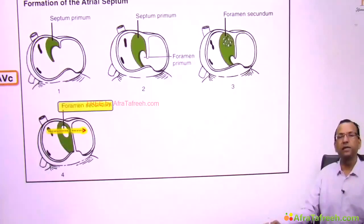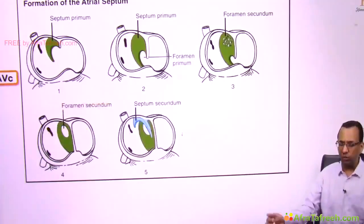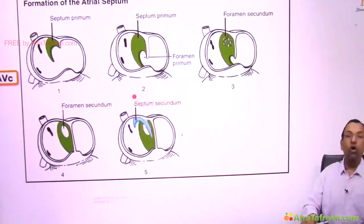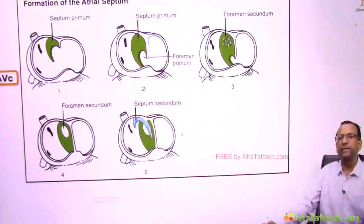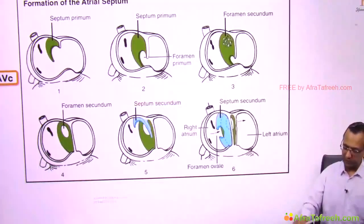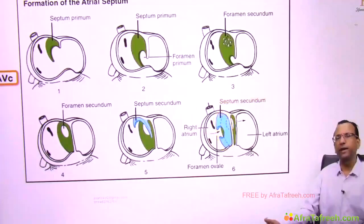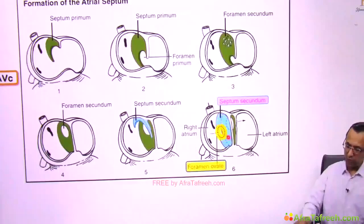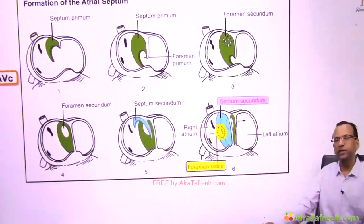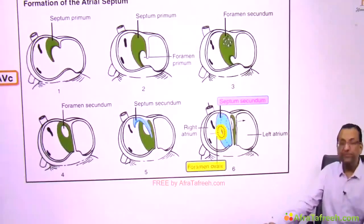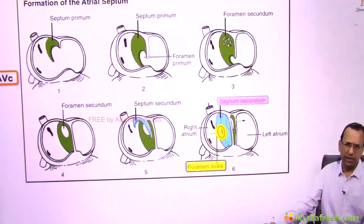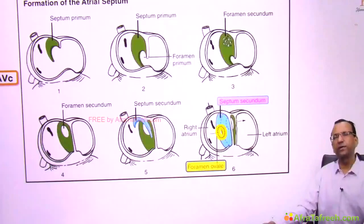But then there is another problem: one more septum is coming — on the right side of the previous one. There is now a right-sided septum, the second septum or septum secundum. But there is good news: it will always have a deficiency. You can use it for passing blood of the right atrium to the left atrium. That deficiency is called foramen ovale. So there is a foramen ovale in the septum secundum which lets blood pass from right atrium to left atrium.